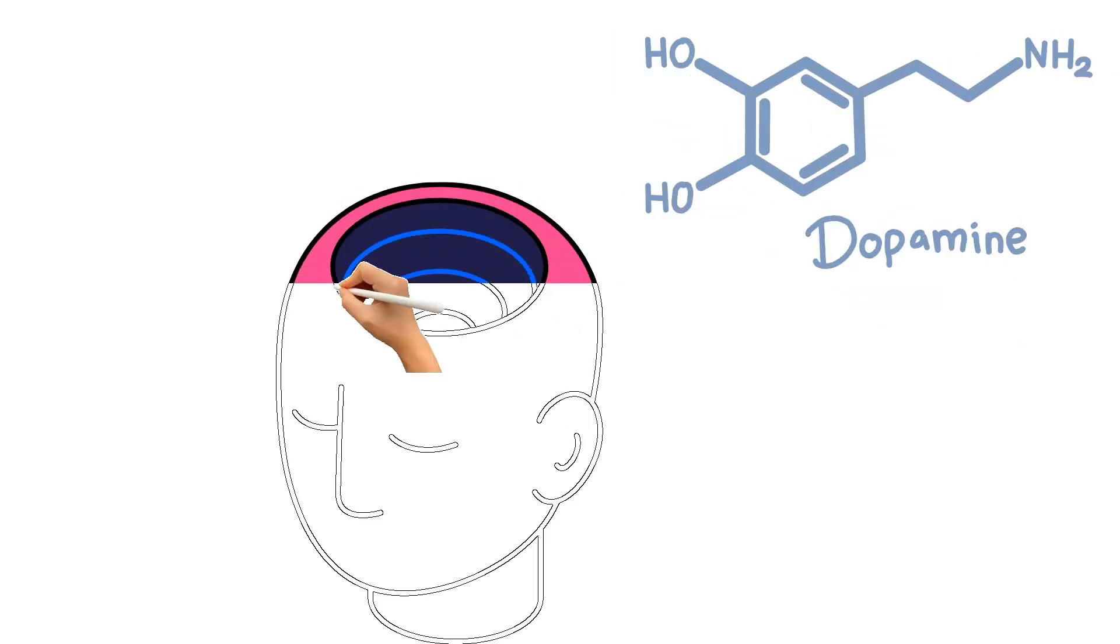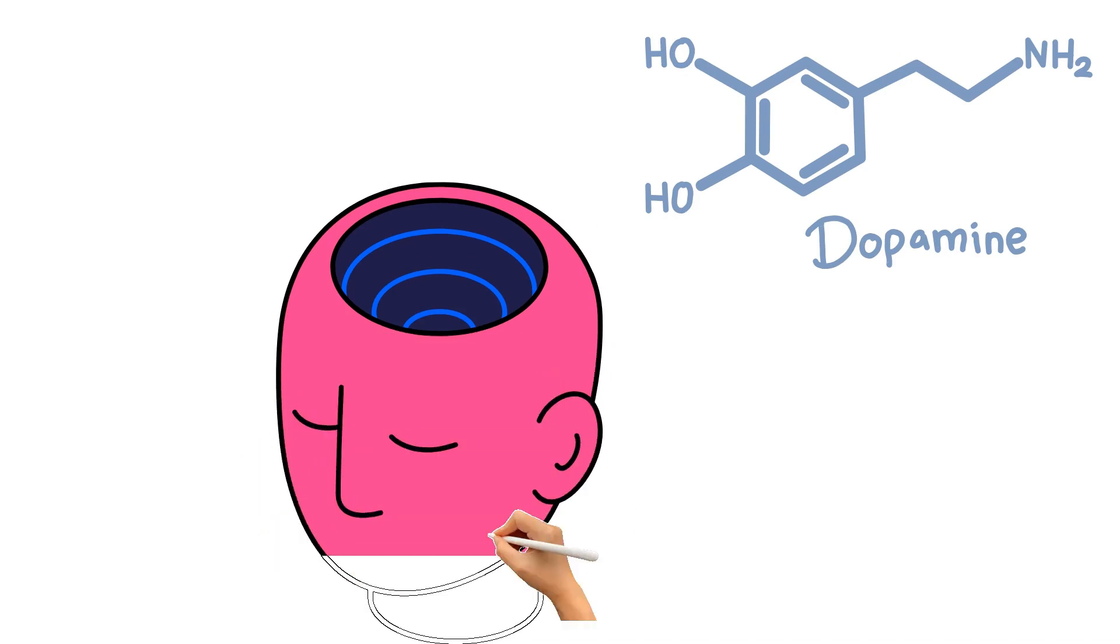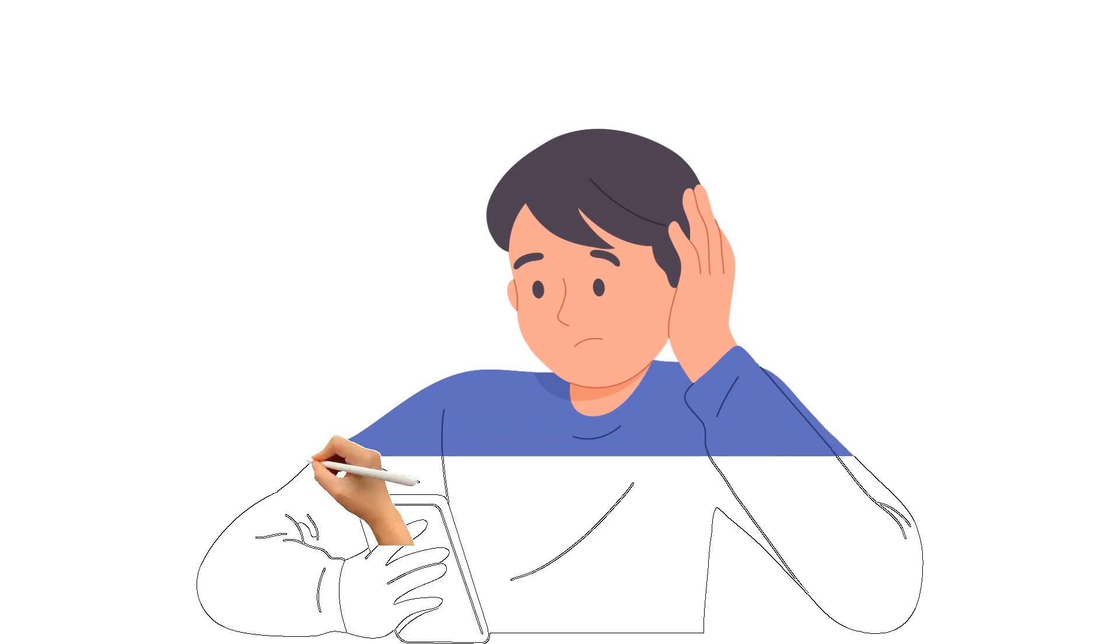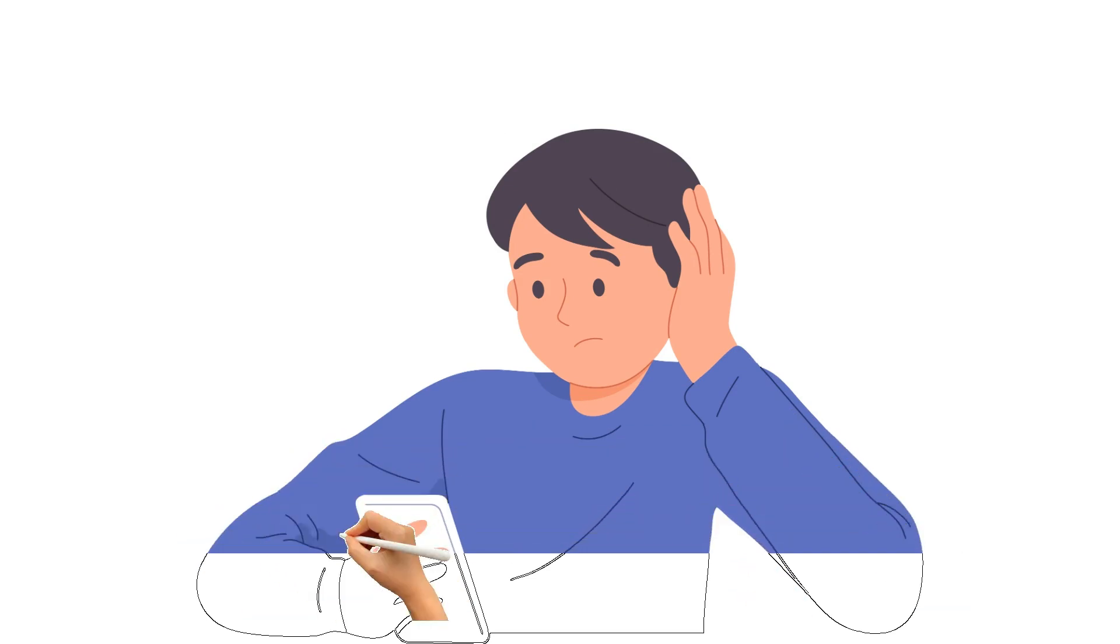Every time you scroll past a post, your brain gets a tiny hit of dopamine. It's like a slot machine for your mind, except instead of coins, you're gambling away your attention span and critical thinking skills.